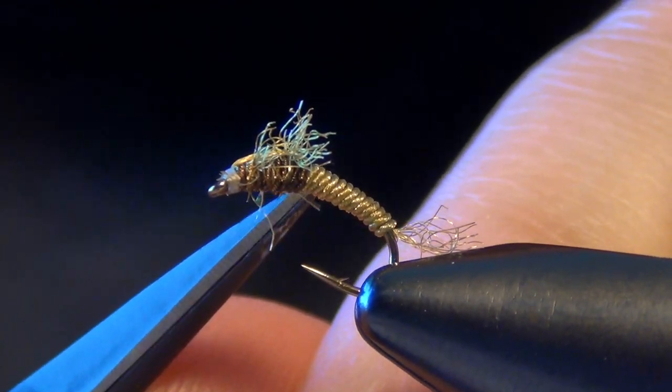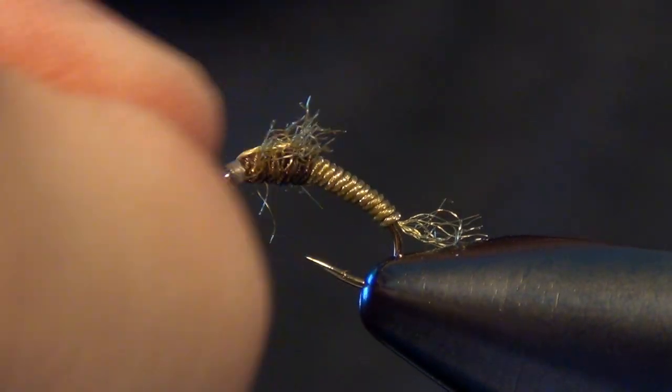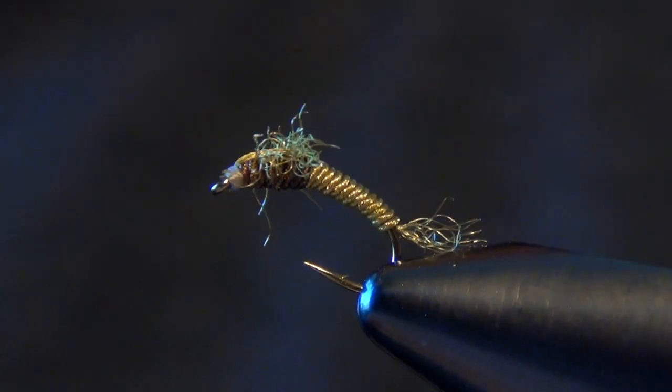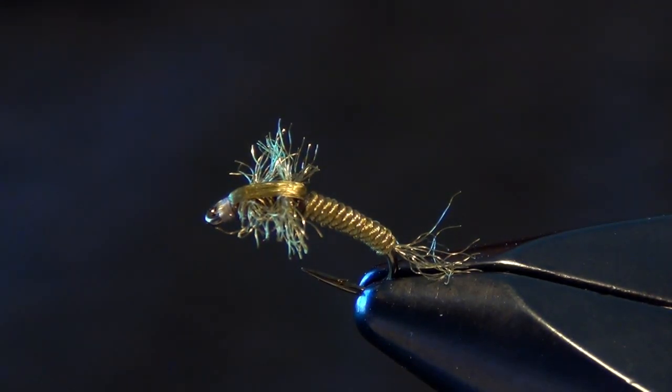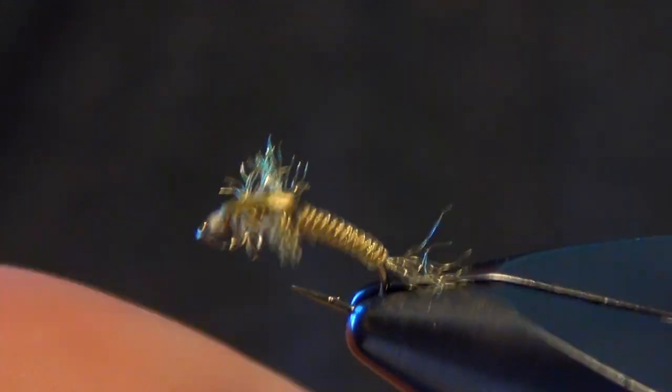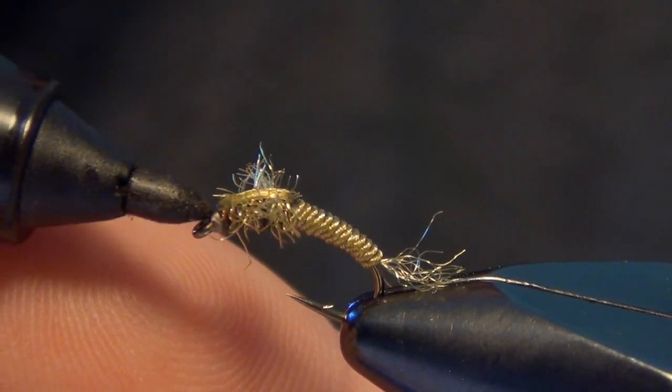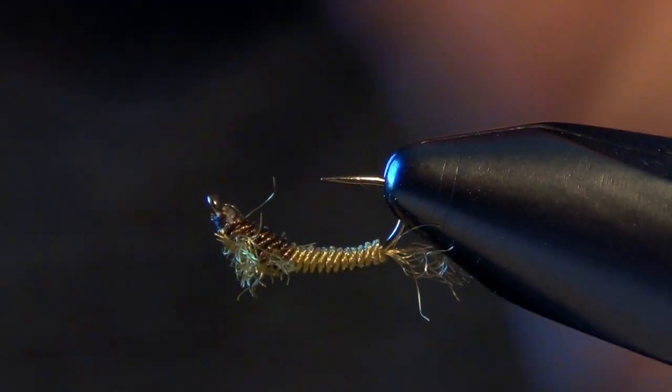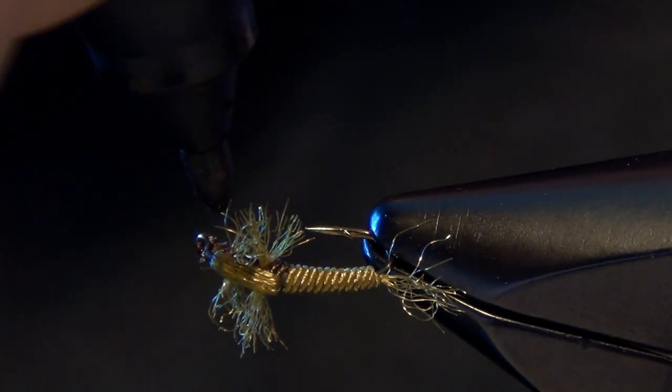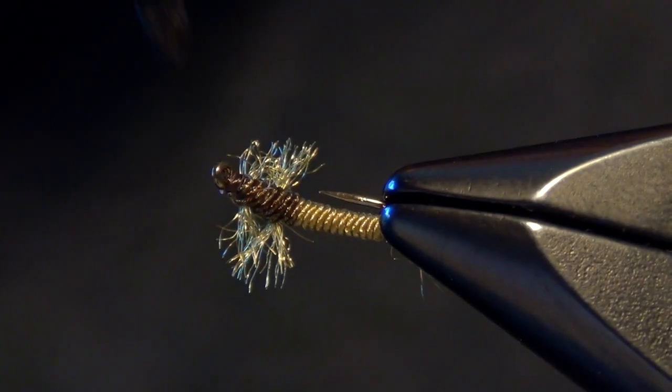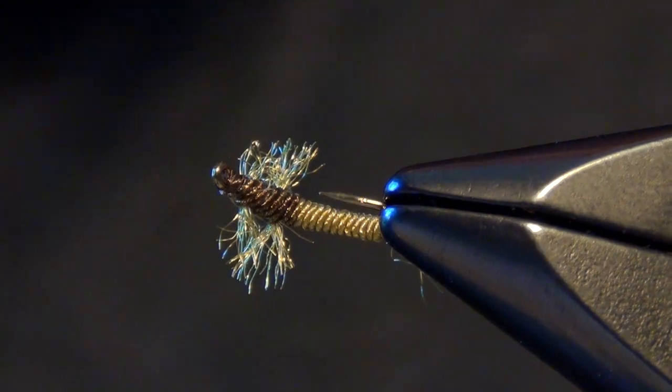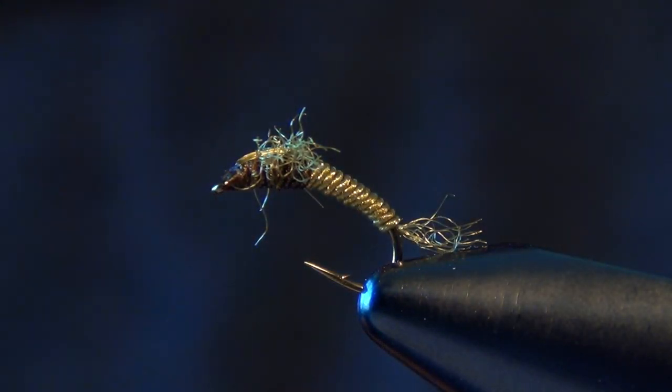Now the head, we use tan thread, so I like to take my brown marker and color my thread. That tan thread really absorbs that brown marker and helps it blend in to the thorax of our fly. That just kind of ties off the fly.